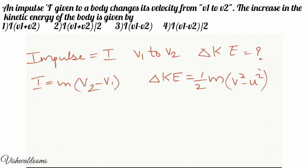So change in kinetic energy is half into M into, so here it will be final minus initial, right? So V2 squared minus V1 squared.